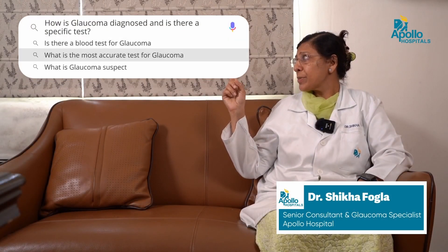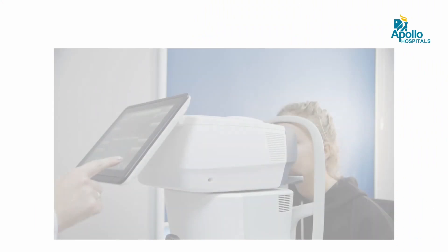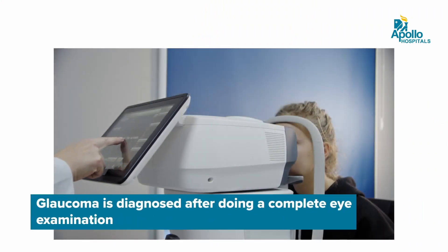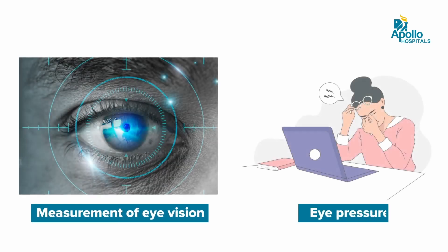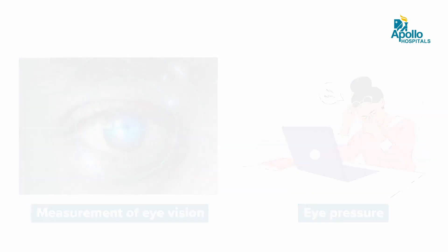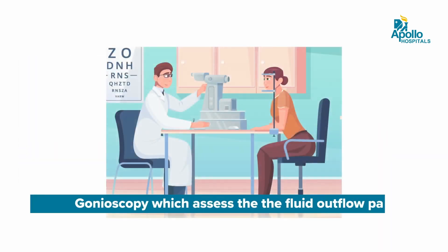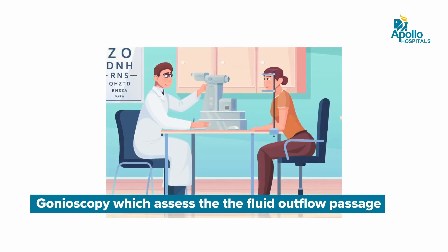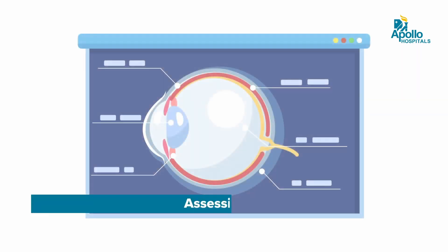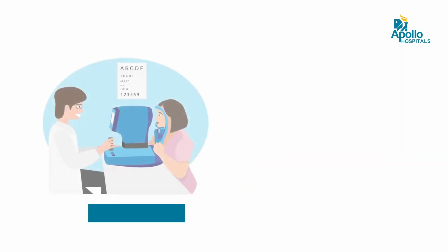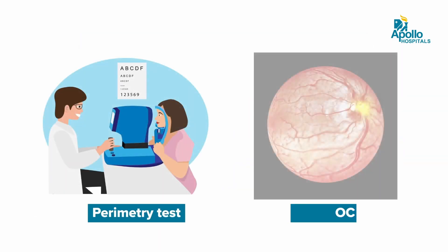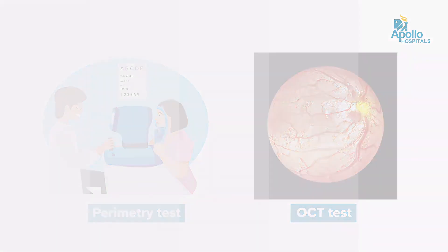How is glaucoma diagnosed? Is there a specific test? Glaucoma is usually diagnosed after doing a complete eye examination, which includes a measure of your vision, eye pressure, the fluid outflow passage which is assessed by gonioscopy, and an assessment of the nerve of the eye, which is followed by a perimetry test and OCT test if required.